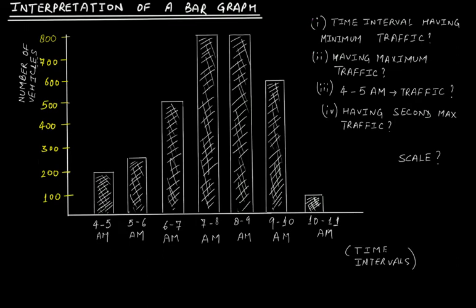On the vertical line we have number of vehicles, starting from 100, 200, all the way up to 800. These numbers represent the number of vehicles. Overall, at this traffic signal we have certain traffic, and for each time interval we have a corresponding bar.